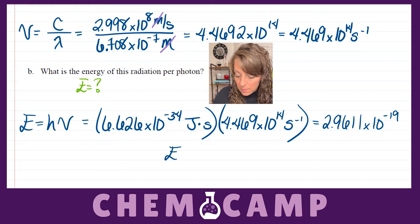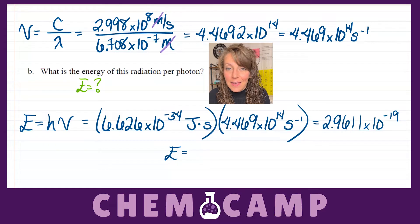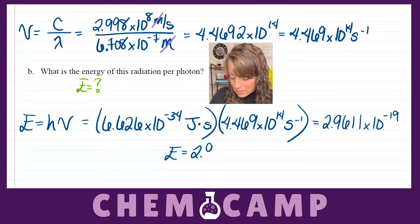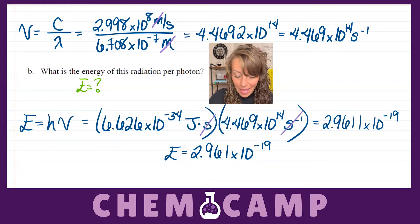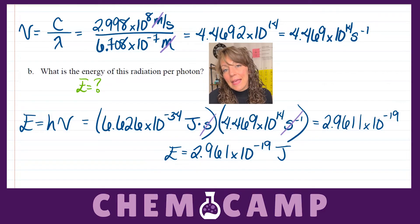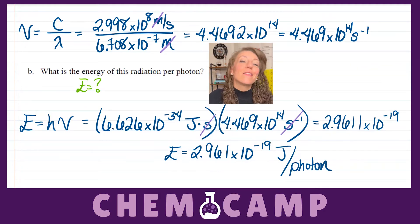Now again, we should consider sig figs. Planck's constant is a constant, so it has infinite sig figs, meaning the frequency here dictates sig figs. Since it has 4 sig figs, we can have 4 sig figs in our answer. So we round to 2.961 times 10 to the negative 19. Our unit: seconds both cancel and we're left with joules, which is an appropriate energy unit. Since the frequency corresponds to one photon, this is joules per one photon — just as the problem asked for.